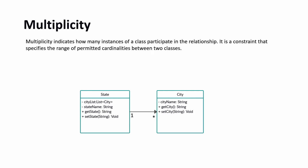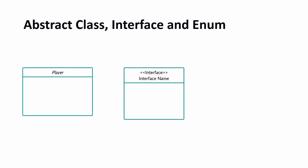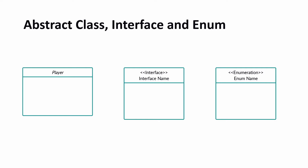Abstract classes, interfaces, and enums have their own representations. An abstract class uses the same rectangle block as a regular class, but the class name is displayed in italics. An interface is represented with a label '<<interface>>' and the interface name. An enum is represented with the label '<<enumeration>>' along with the enum name and its field values. These are the different ways to represent non-regular classes in a class diagram.